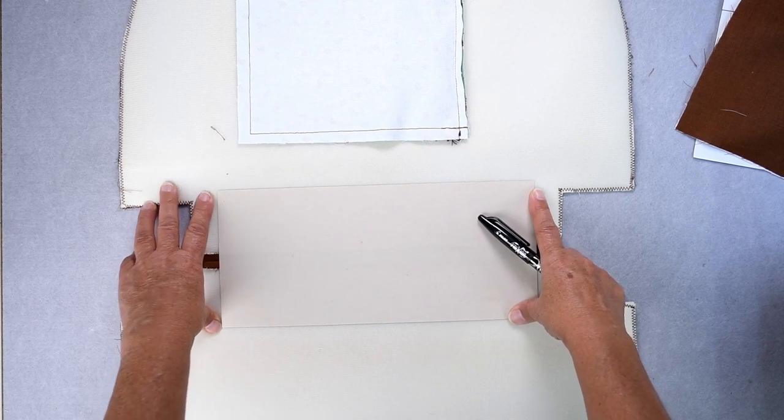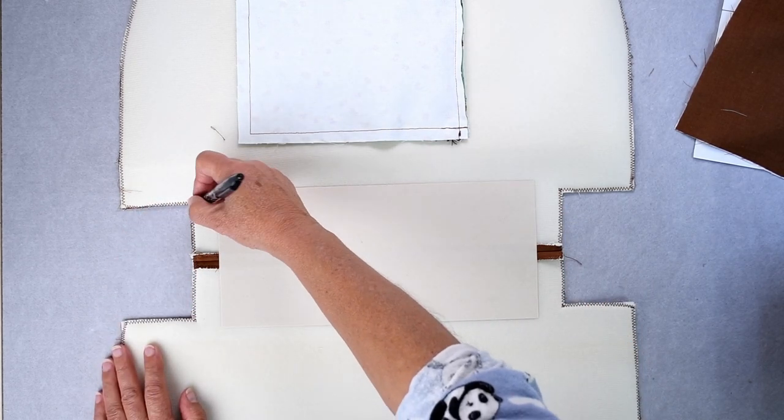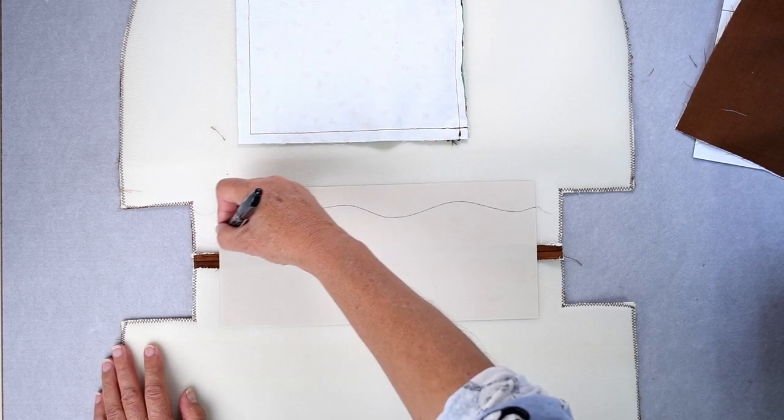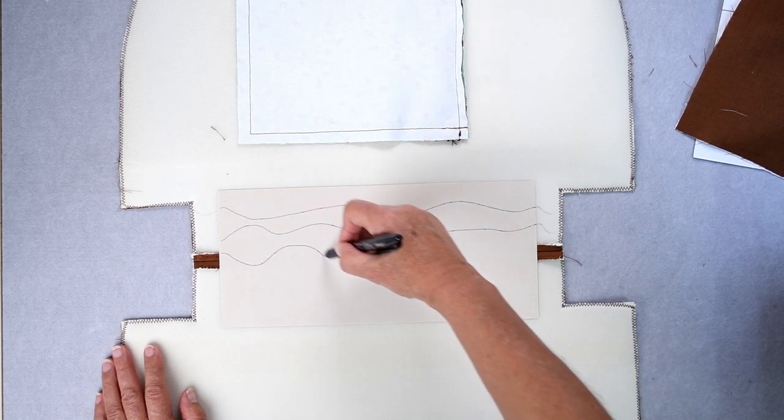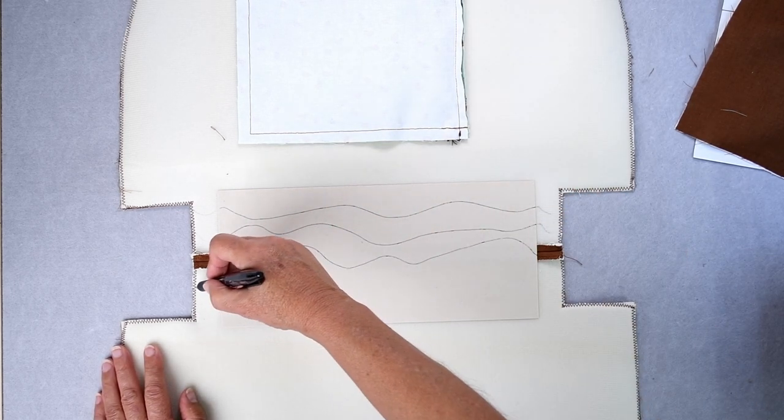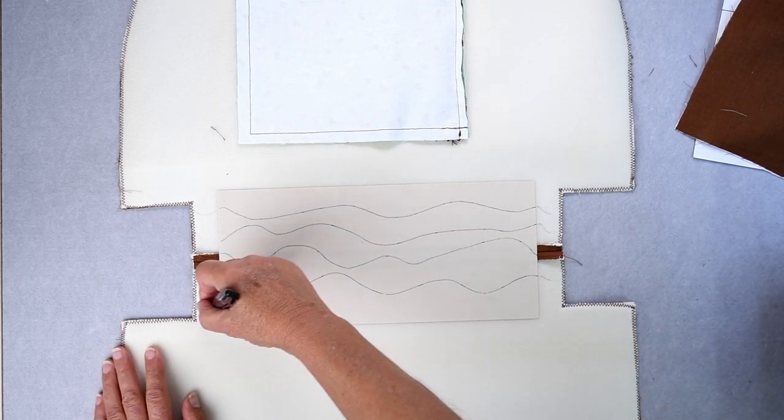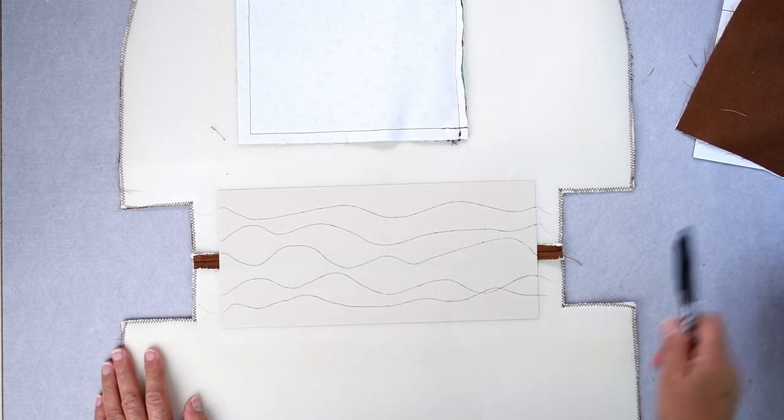I suggest that you draw your pattern onto your bottom so you know what you're going to stitch. For this one I'm just going to do some crazy stitching lines, just a random pattern something like that, maybe one more.